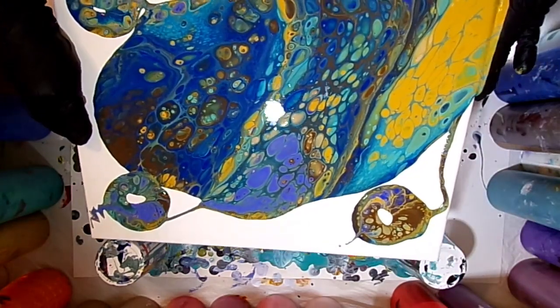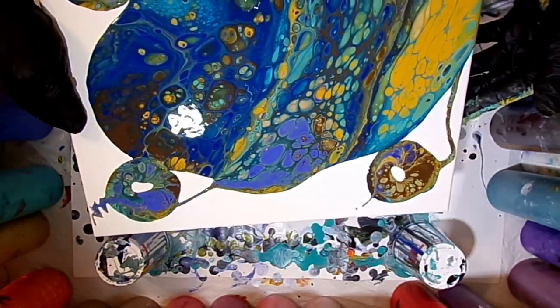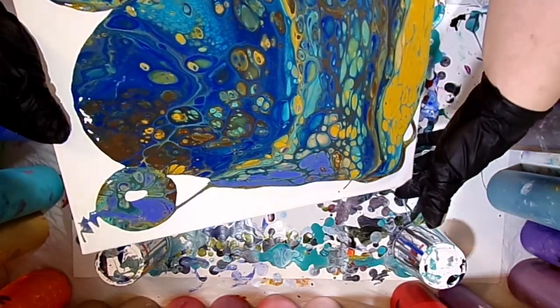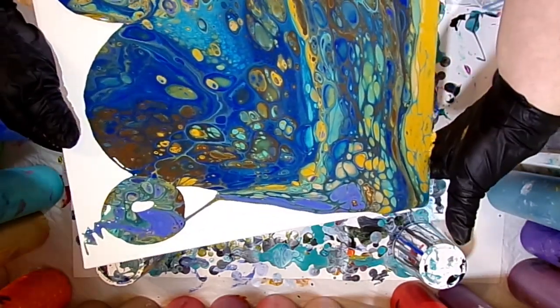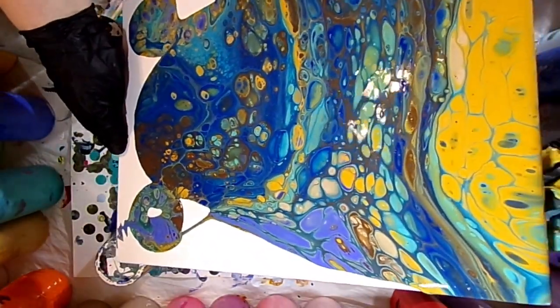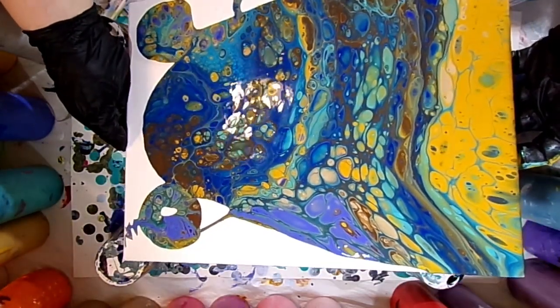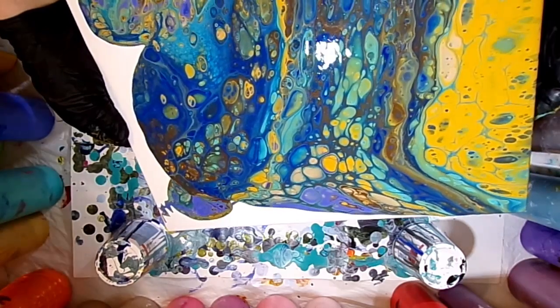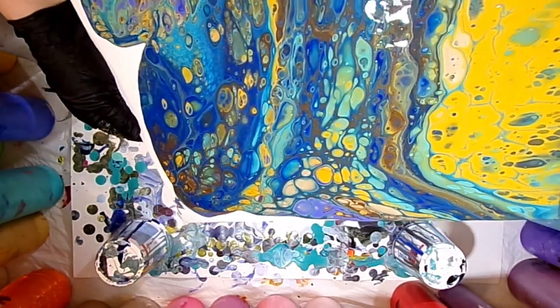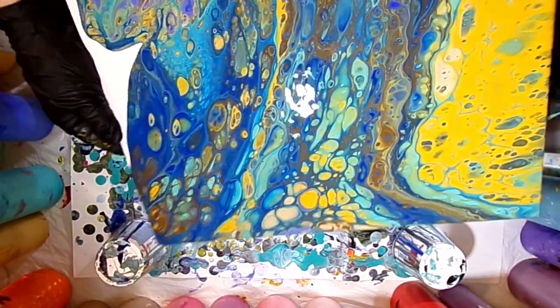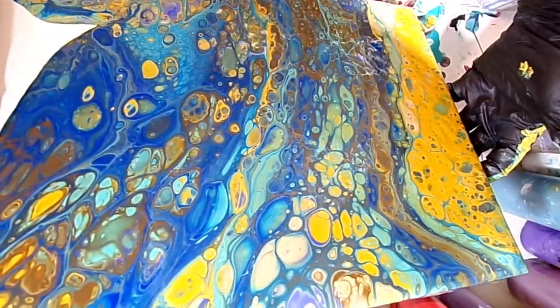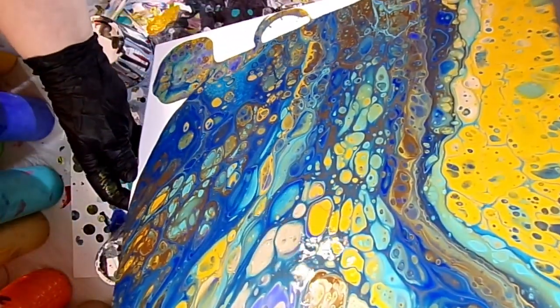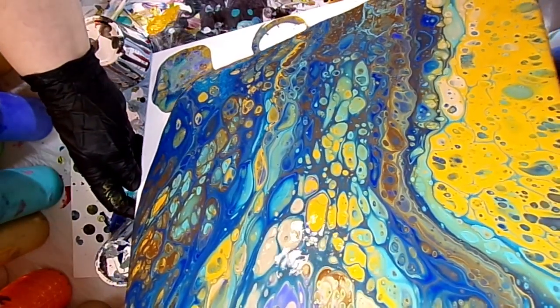I'm holding the corner kind of in an L shape and I bring it to each corner, back to the center a little bit, and then off to the next corner. I just work my way around the canvas doing that, making sure I get it to each edge, each corner. You want to make sure you get your edges real well because it's so much easier to fix your edges now instead of having to go back and try to touch up those edges.